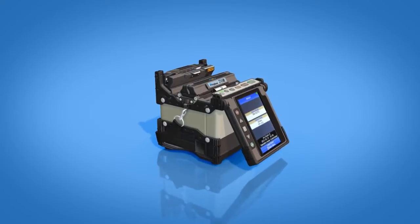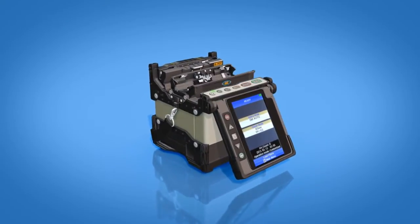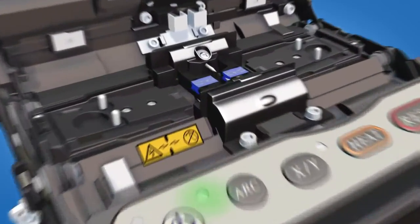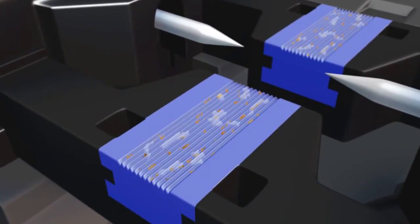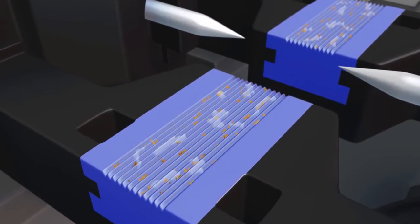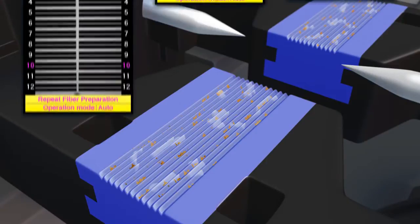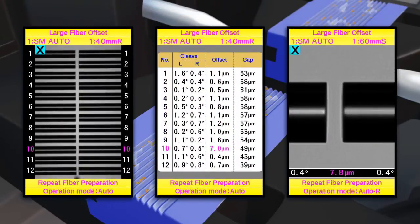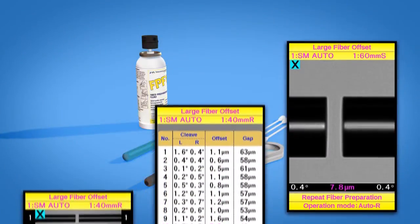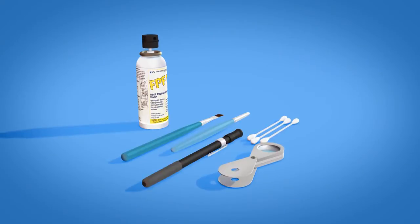Today's advanced splicing equipment requires minimal maintenance, but contamination in the V-grooves of splicers is still a primary source of trouble for splicing technicians. This contamination offsets fibers and degrades splicer performance. To alleviate V-groove contamination, AFL offers the splicer V-groove cleaning kit.